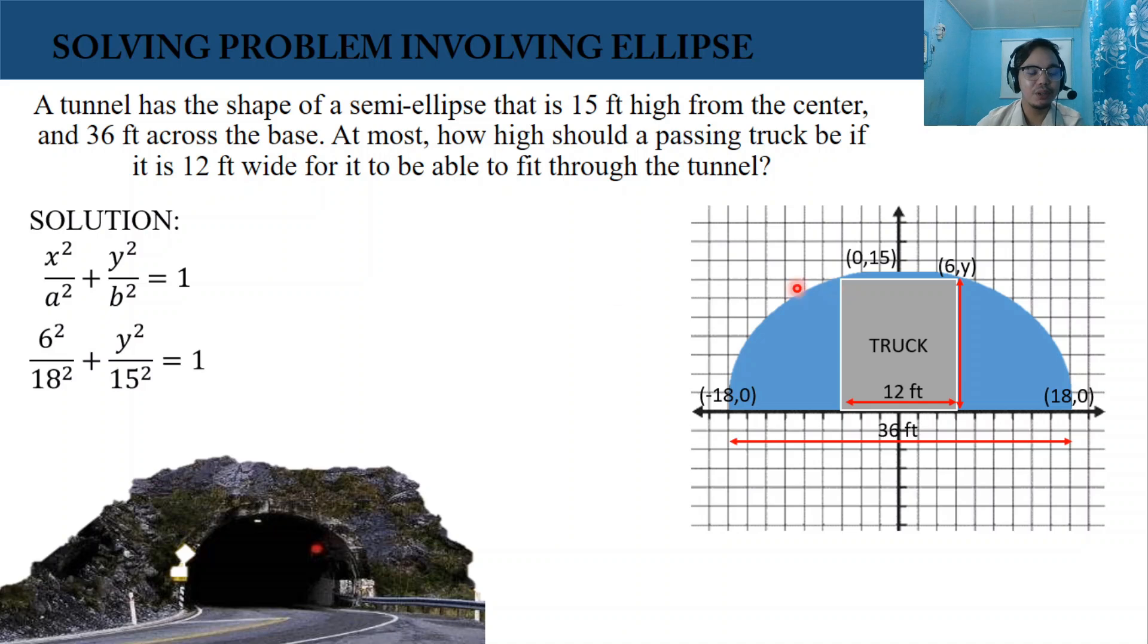So by substitution, we have 6 squared. So I used the positive side. Then a is 18. So 6 squared over 18 squared plus y squared over 15 squared equals 1.